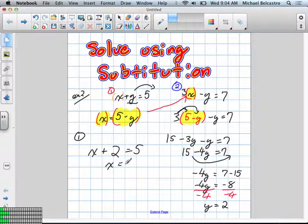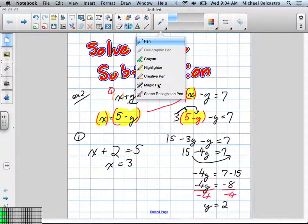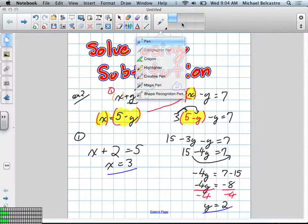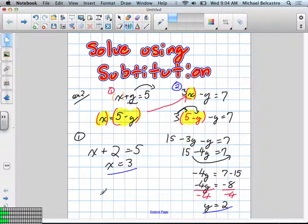x is equal to what? 3. Okay, 5 minus 2, which is 3. So our final answer in this question is x is equal to 3, y equals 2, and that is technically a coordinate. So our coordinate, the point of intersection of the two lines, is at 3 and 2.